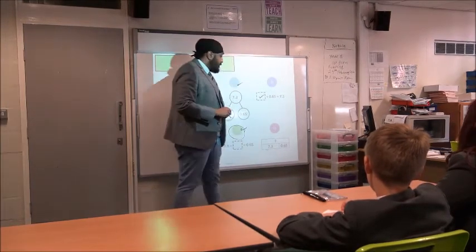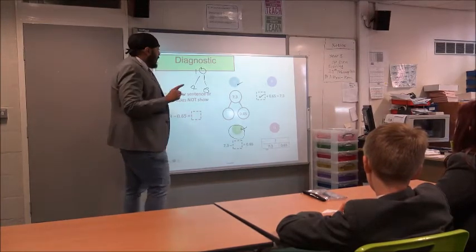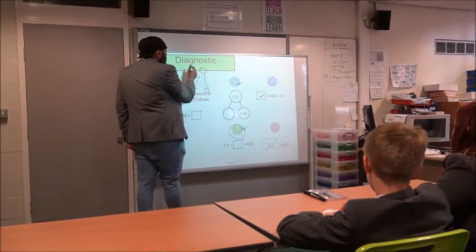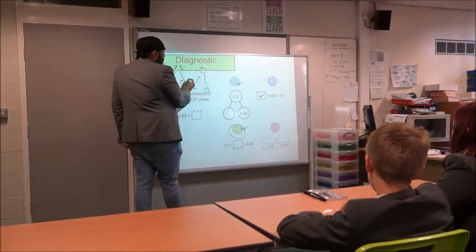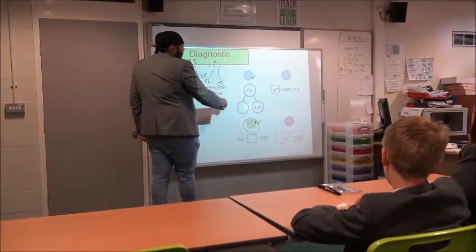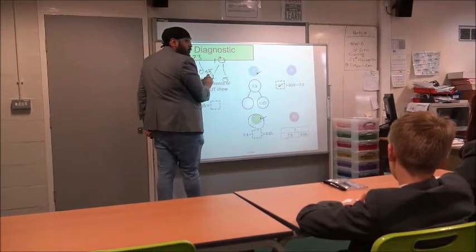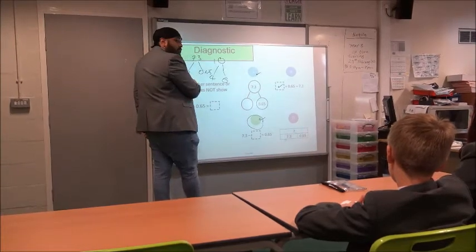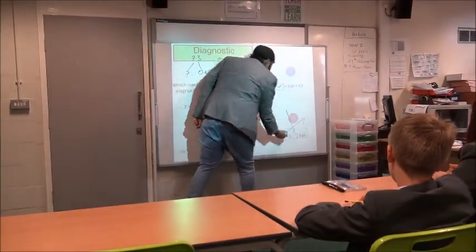7.3 adds 0.65 equals the top number which can't be right. Okay. Okay then, let's have a look. So, this is our 7.3. This was then our 0.65 and this was our missing number. So, if I did 10 plus 6, would that give us 4? No. No. No. So, would 7.3 add 0.65 give us our missing number? No. No. So, therefore, this one isn't correct.